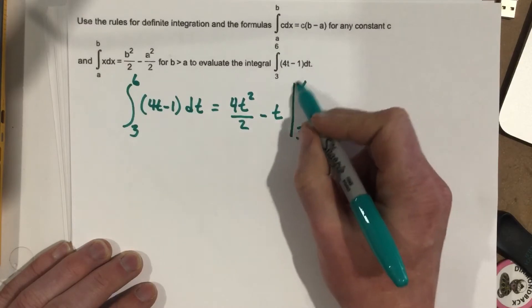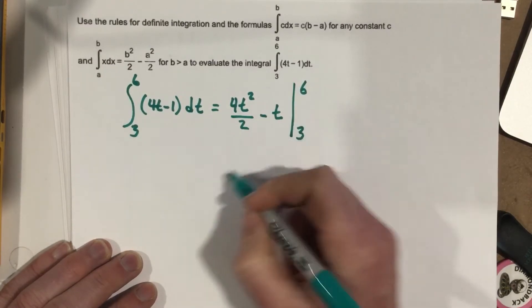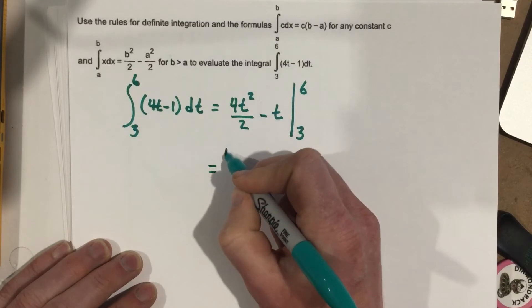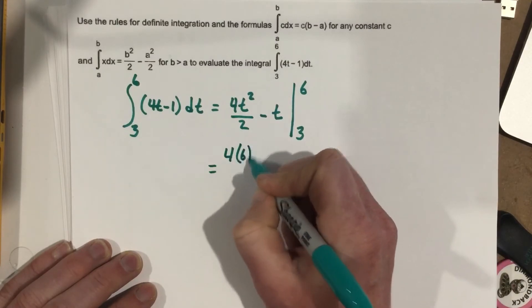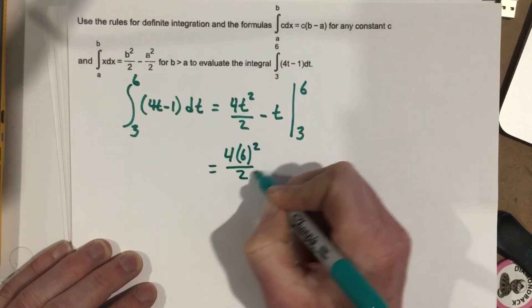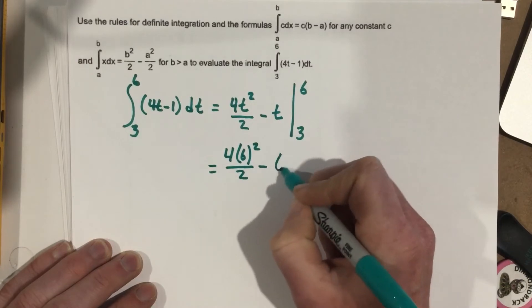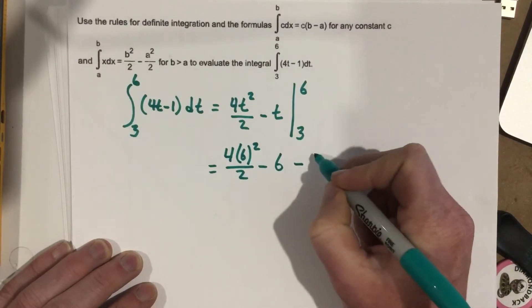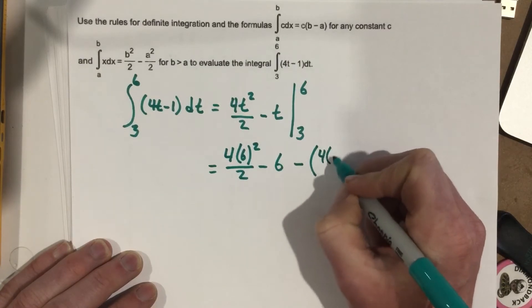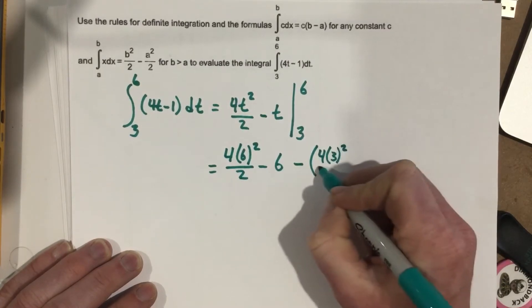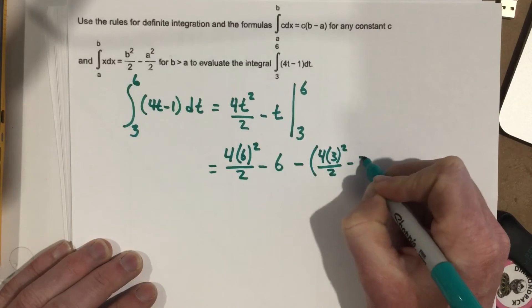So I need to plug in 6 and subtract out 3. So I'm going to plug in 6 for t: 4 times 6 squared over 2 minus 6, minus 4 times 3 squared over 2 minus 3.